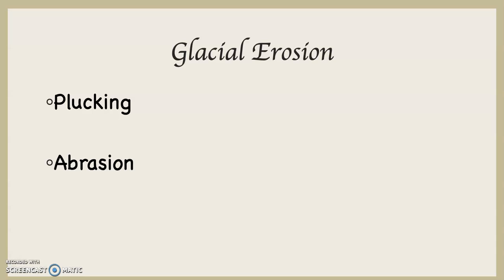The second way that glaciers erode and degrade the landscape is through abrasion. Abrasion is the scraping and grinding effect of both the glacial ice and the material — the rocks, gravel, sand — everything else that's been picked up by the glacier through plucking and then moved along and grinds along the side of the landscape.